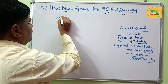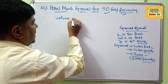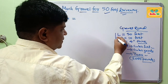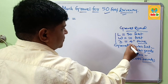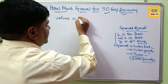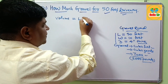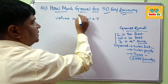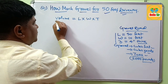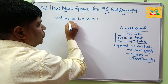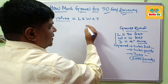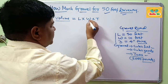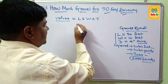The volume of required gravel depends on the dimensions of your driveway: length, width, and thickness. The required gravel quantity is equal to the volume, and volume is calculated by multiplying all three dimensions — length, width, and thickness.